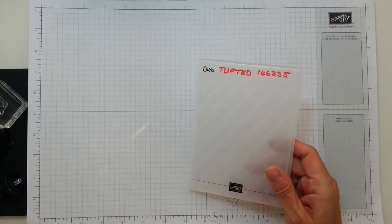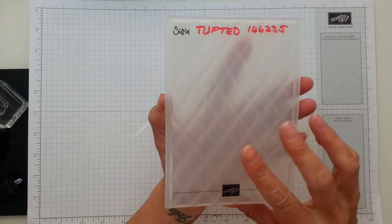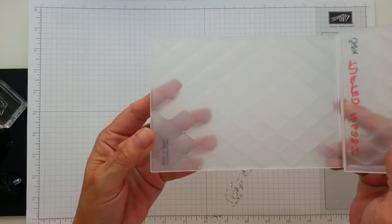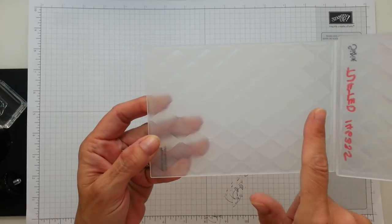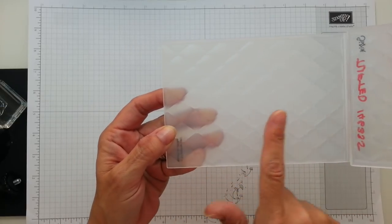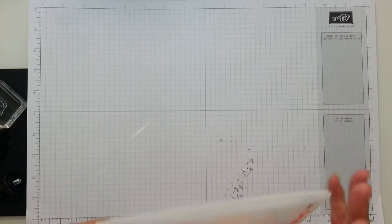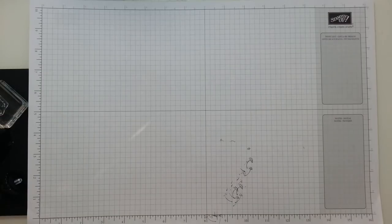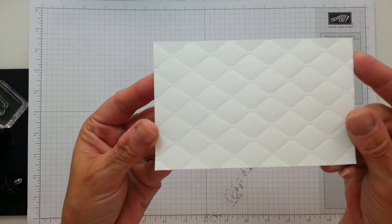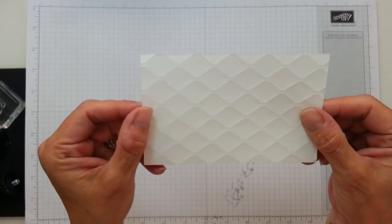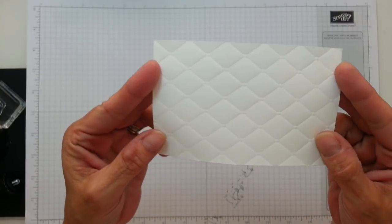I've also been using this beautiful tuft embossing folder. It's absolutely gorgeous and I just love what it does to cardstock. It's absolutely amazing. Look, it looks like a quilt. It's just beautiful. Either way it's gorgeous but I'm loving this one.